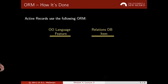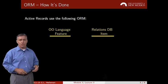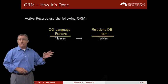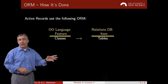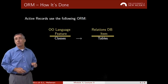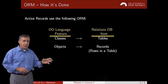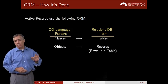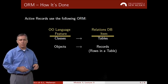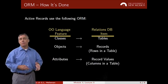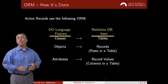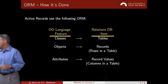Here's how that object relational mapping works. First, the object-oriented language feature, a class, gets mapped to tables in a relational database. Objects get mapped to records, or in other words, rows in the table. And then the attributes get mapped to particular record values — in other words, the columns in the database table.